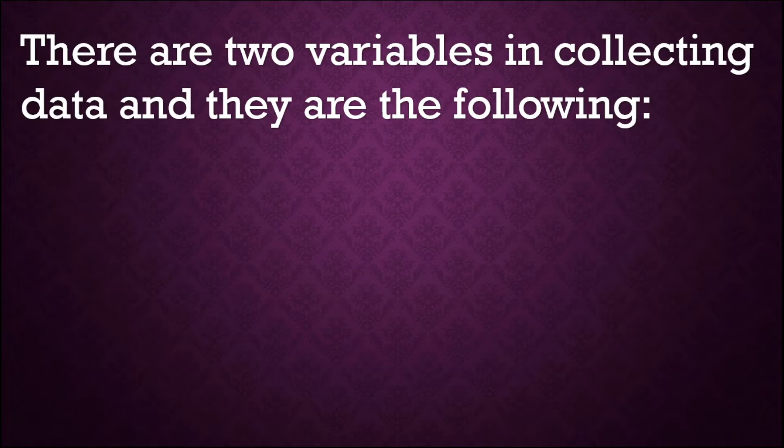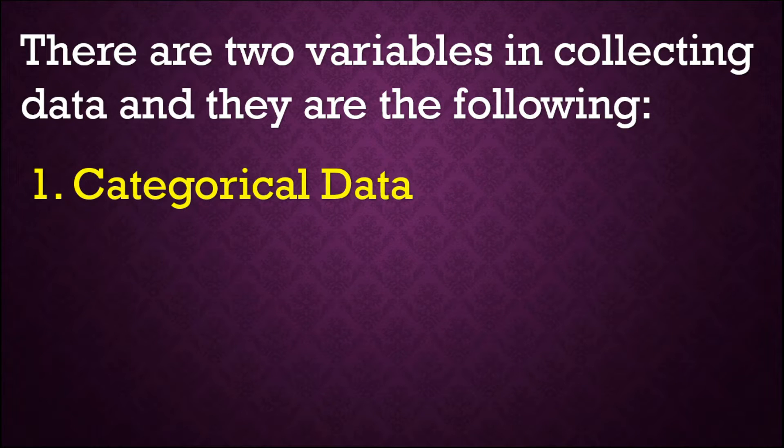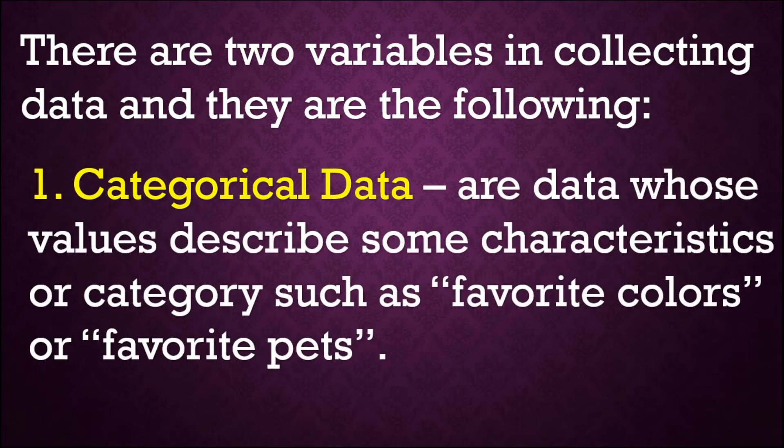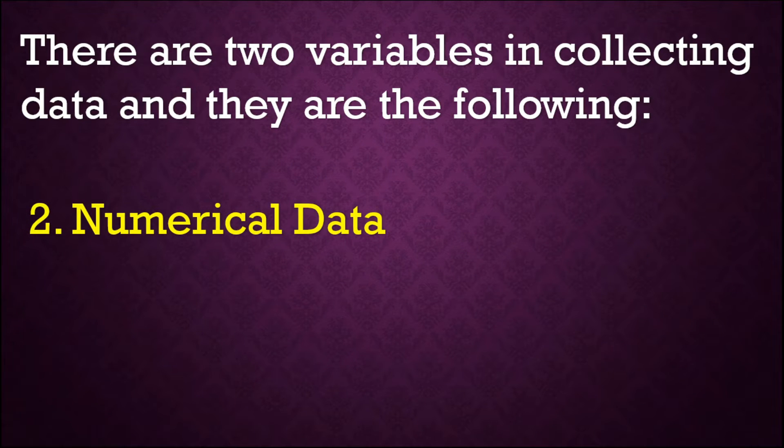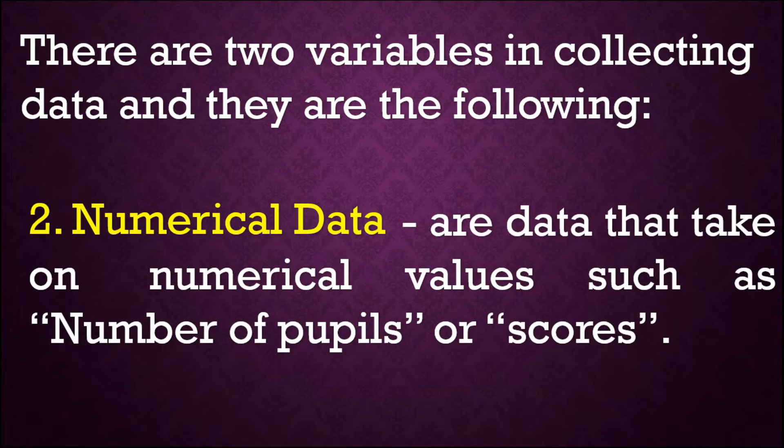There are two variables in collecting data and they are the following. One is categorical data. Categorical data are data whose values describe some characteristics or categories such as favorite colors or favorite pets. The second one is numerical data. Numerical data are data that takes on numerical values such as number of pupils or scores.